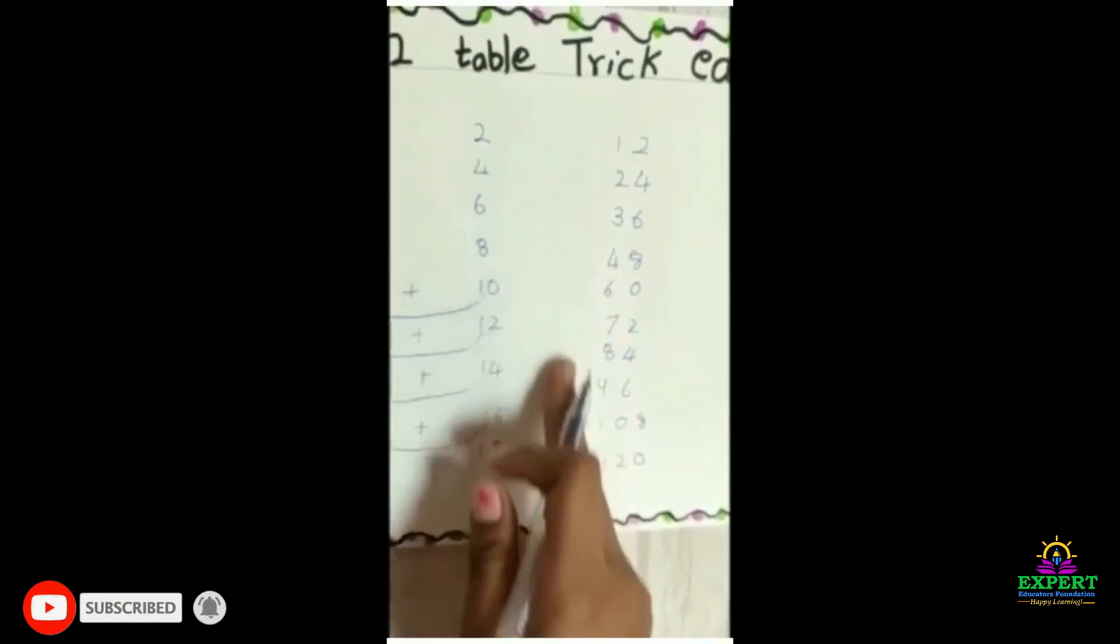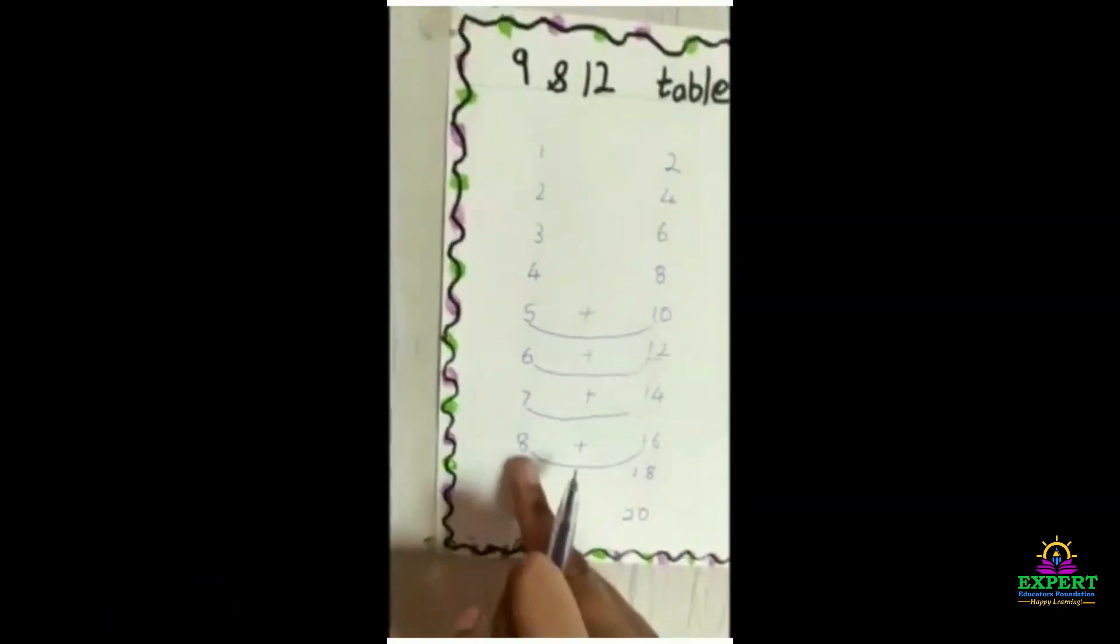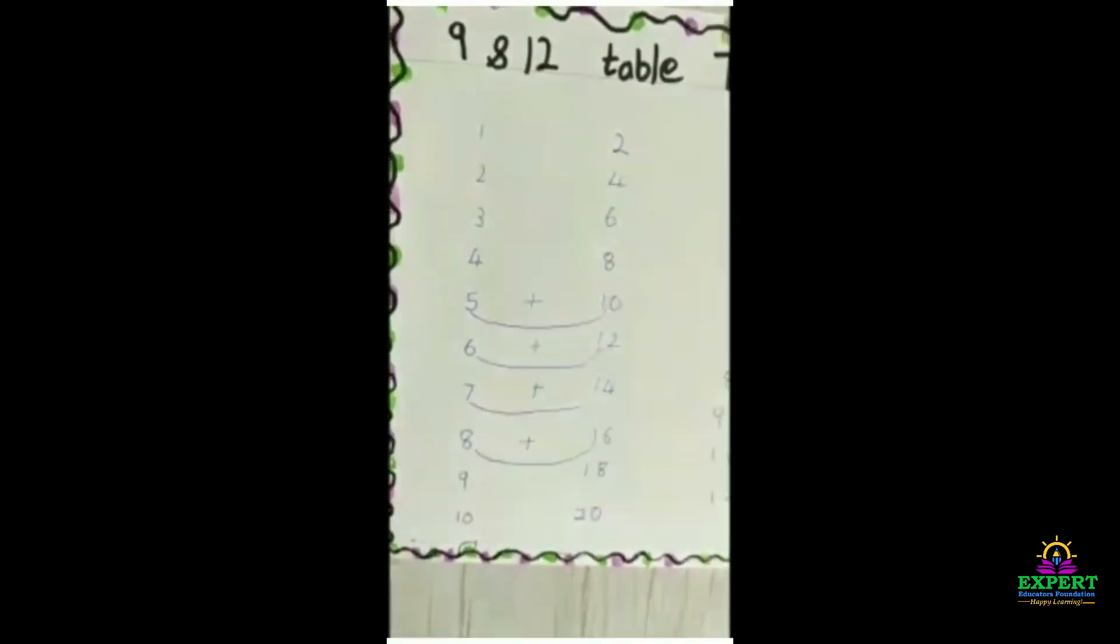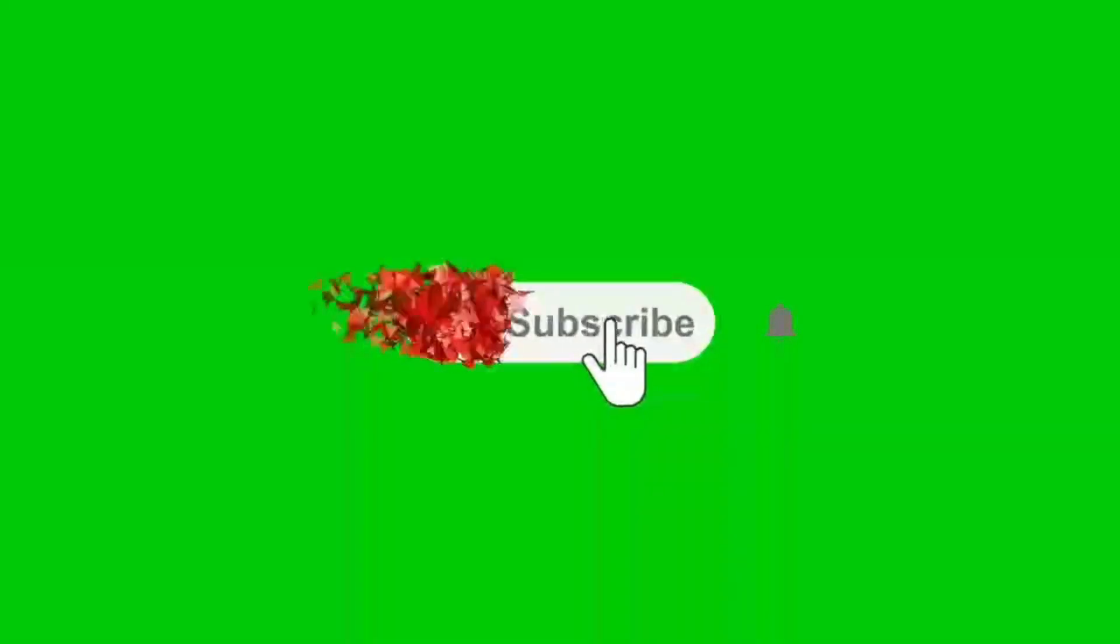So, our table of 12 is completed from this easy trick. Let's close up here.